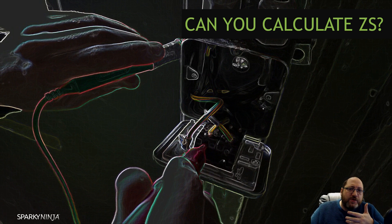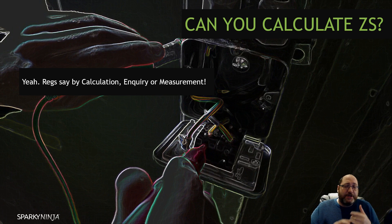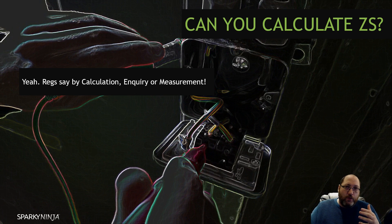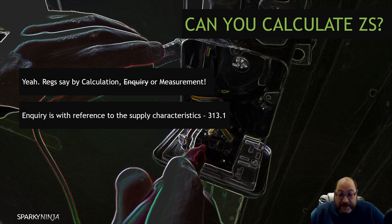The common response is: yes, you can calculate it because the regulations say we can obtain it by calculation, inquiry, or measurement. Well, that's only for — the inquiry is only for supply characteristics, so the ZE and PFC. So we can't inquire a ZS measurement; we just can't do that.